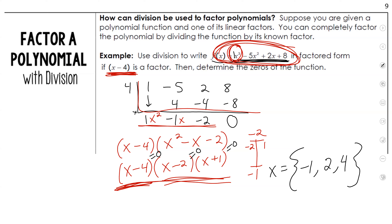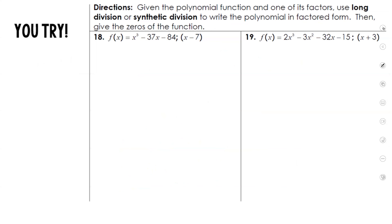I used synthetic division only because they gave me one of the factors. If they give you one of the factors, you can figure out the other ones through synthetic division. Let's do another example. They gave you one of the factors: one of the factors is x minus 7. So we're going to do the opposite and put a 7 there.